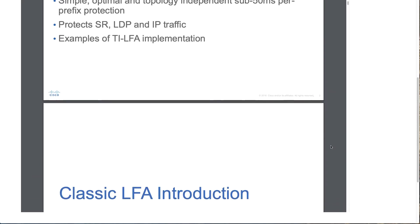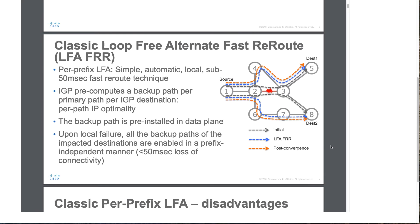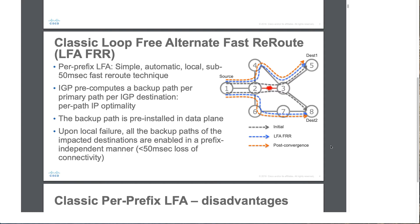Let's quickly talk about the classic Loop-Free Alternate. LFA stands for Loop-Free Alternate and FRR stands for Fast Reroute. Classic LFA is per-prefix based. It is simple, automatic, local, and a sub-50 millisecond fast reroute technique. IGP pre-computes a path per primary path per IGP destination, giving per-path IP optimality. The backup path is pre-installed in the data plane, and upon a local failure, all backup paths for impacted destinations are enabled in a prefix-independent manner.